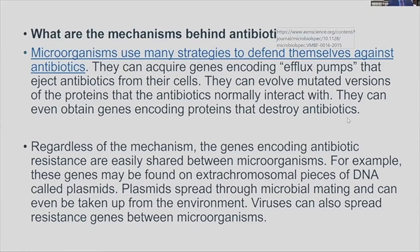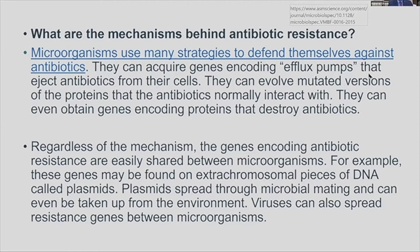Talking more about the mechanisms behind antibiotic resistance: microorganisms use many strategies to defend themselves against antibiotics. They can acquire genes encoding efflux pumps that eject antibiotics from their cells. They can evolve mutated versions of the proteins that antibiotics normally interact with. They can even obtain genes encoding proteins that destroy antibiotics. Regardless of the mechanism, the genes encoding antibiotic resistance are easily shared between microorganisms — for example, these genes may be found on extrachromosomal pieces of DNA called plasmids.